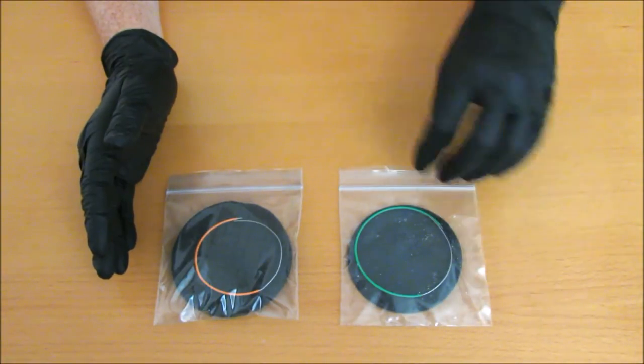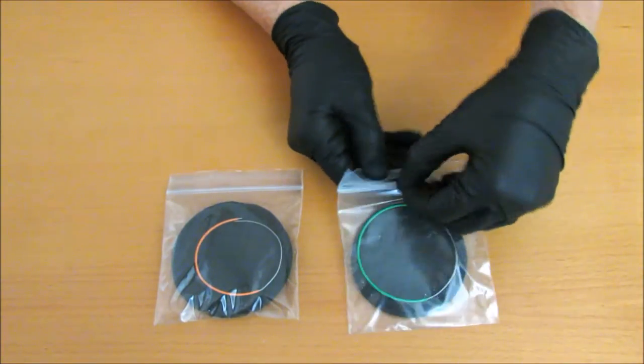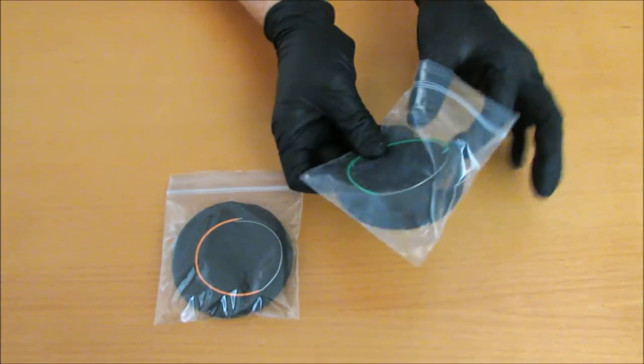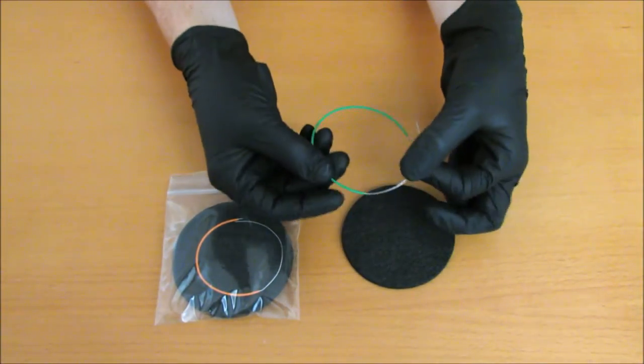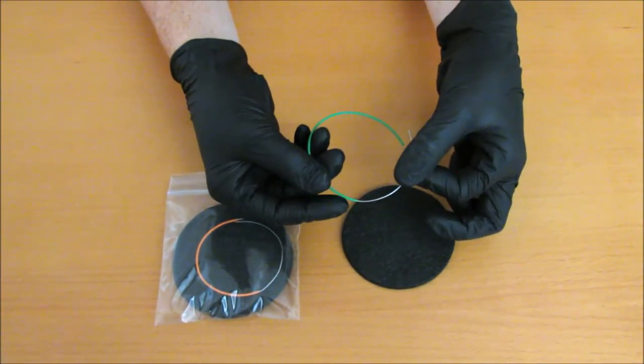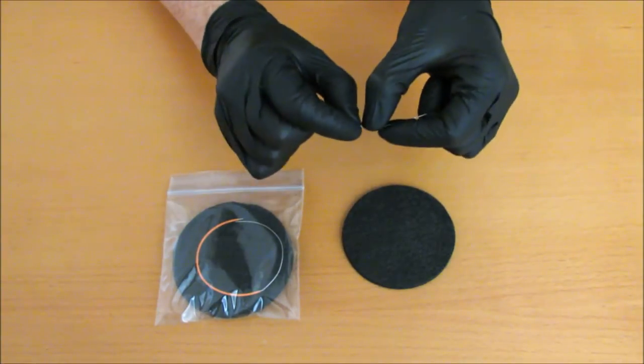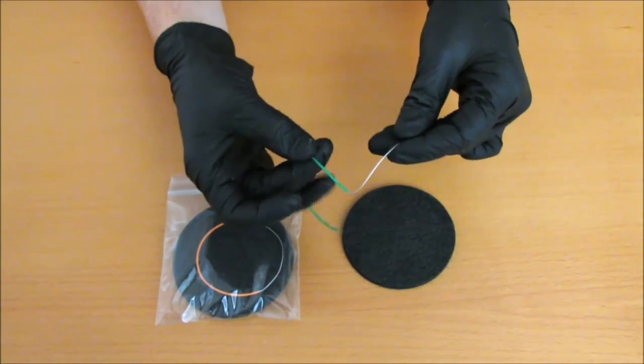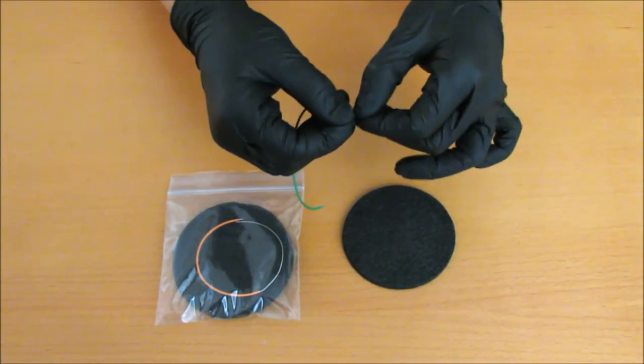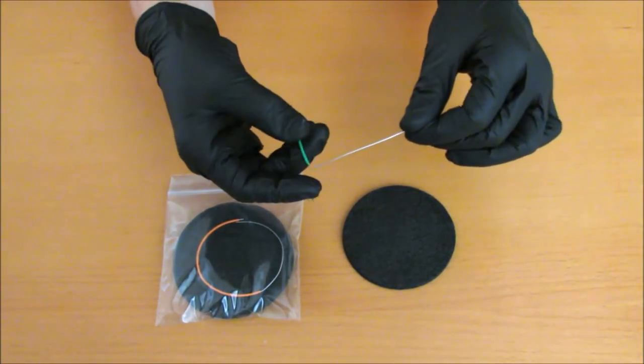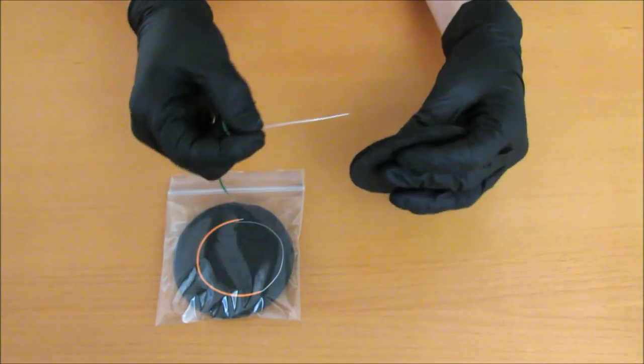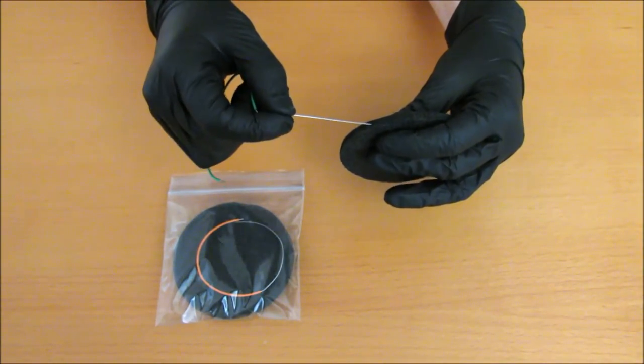Now we'll prepare our electrodes. Let's start with the anode. That's the one with the green wire. Bend the wire where the plastic sheath ends at a 90 degree angle. Then straighten out the bare end of the wire. Insert the wire in the felt disc, being sure that it doesn't poke through either side.